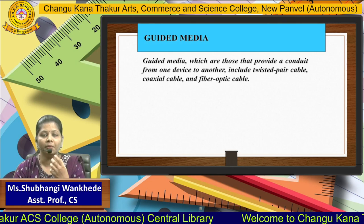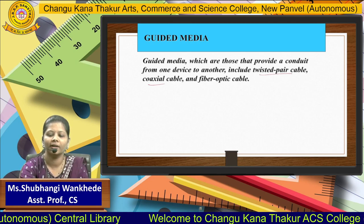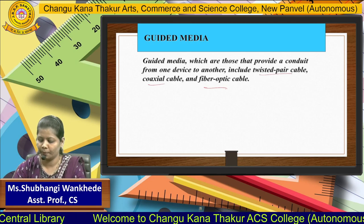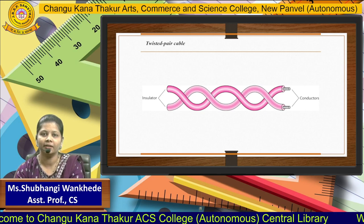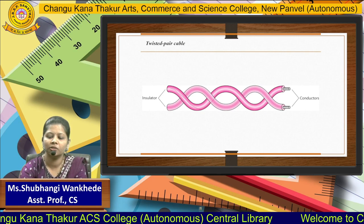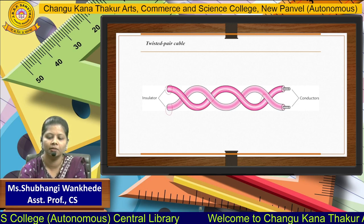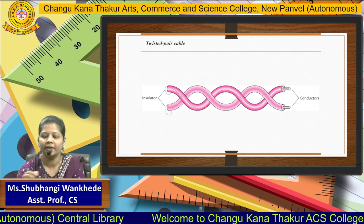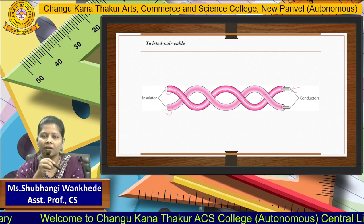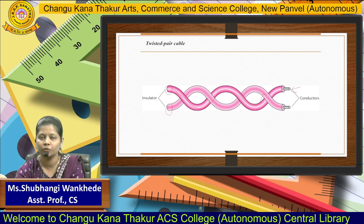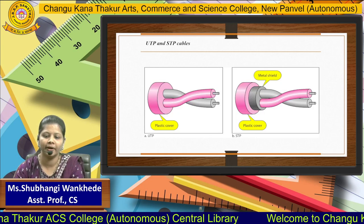Guided media provides a conduit from one device to another, which includes twisted pair cable, coaxial cable, and fiber optic cable. The first is twisted pair cable — as the name and diagram show, there are two cables twisted around each other. The insulator covers the wire inside, and the inner wire is called the conductor. The conductor is the main element carrying data from sender to receiver, covered with an insulator.